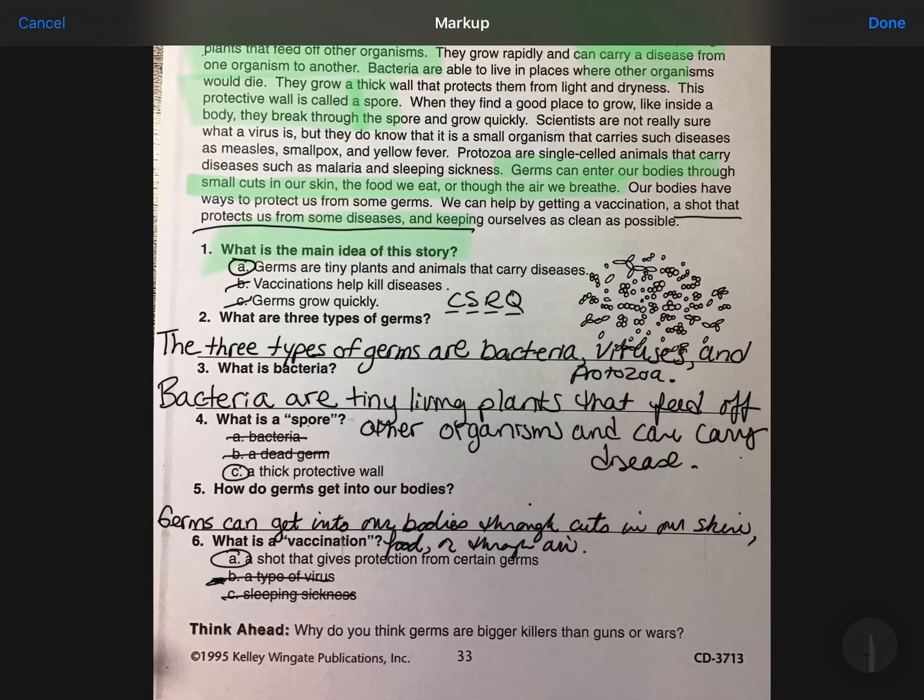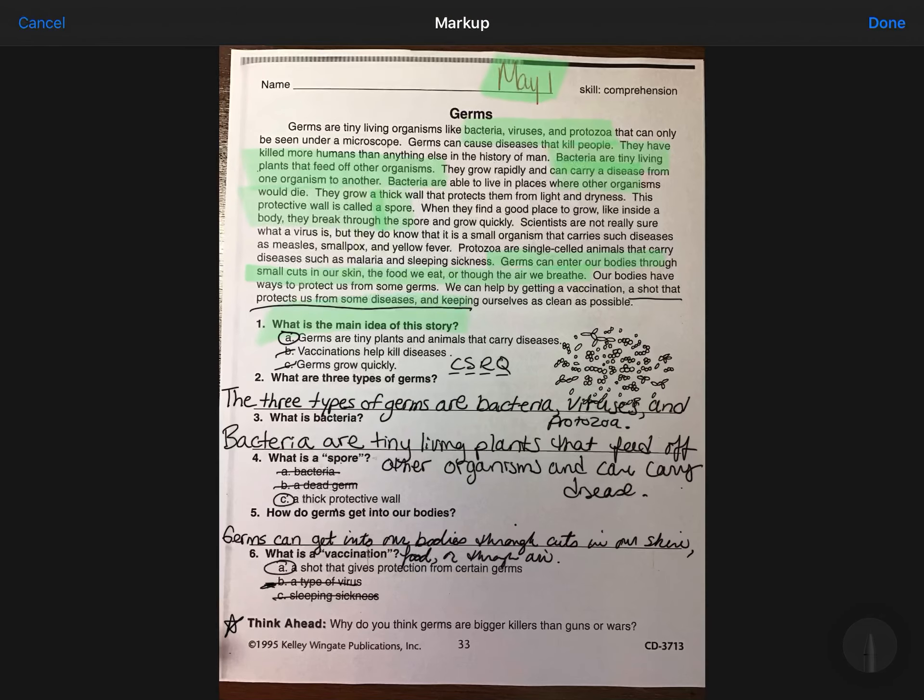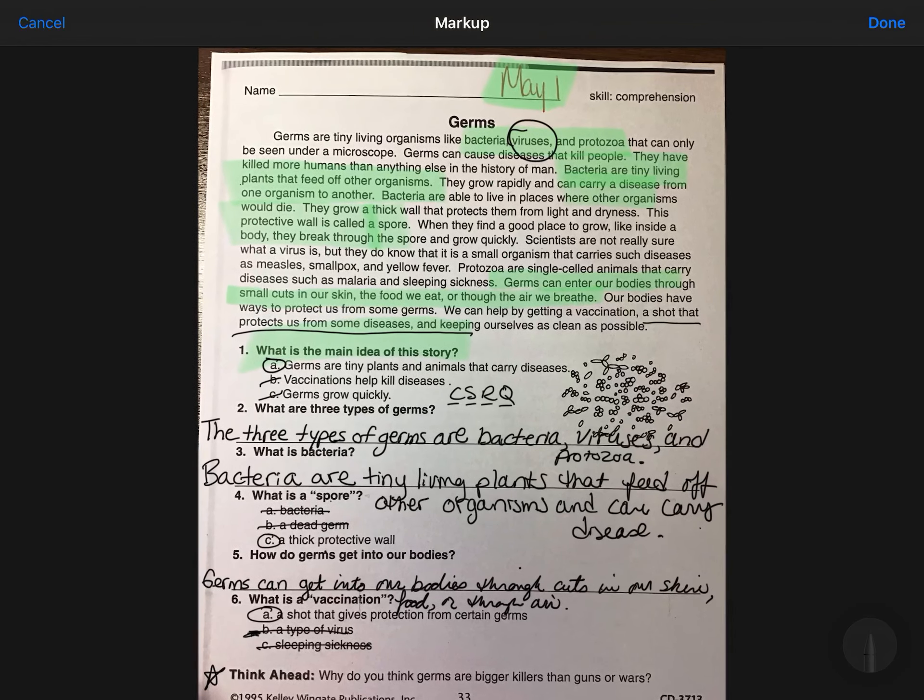Okay, think ahead. Why do you think germs are bigger killers than guns or wars? So that would definitely be bonus if you would like to turn the page over or use a blank page and write about that. I, again, found this extremely interesting because we have the COVID-19 or the coronavirus right now. So that falls under a virus. And it is affecting us in many, many ways because we cannot go to school. It is a pandemic from the CDC. The cases from as of yesterday was 981,246 cases in the U.S. since the first in February.